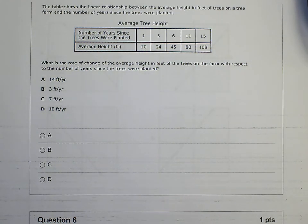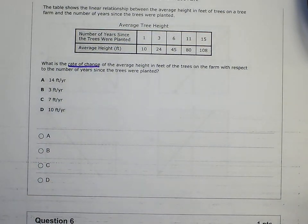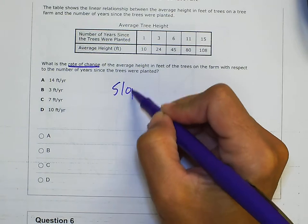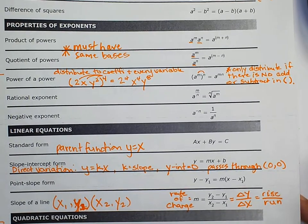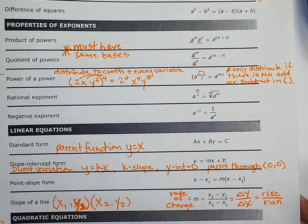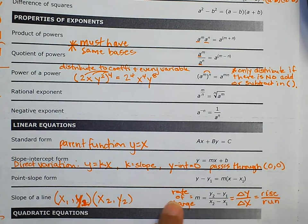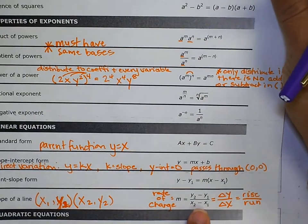Number 5: The table shows the linear relationship between the average height in feet of trees on a tree farm and the number of years since planting. What is the rate of change of average height with respect to years? Rate of change means slope. On your brain dump you wrote: rate of change = slope = slope formula = change in y over change in x = rise over run. All of those things mean slope. So we're looking for the slope of a line.